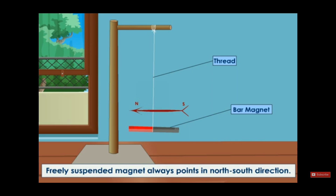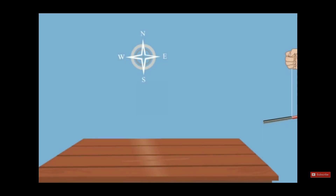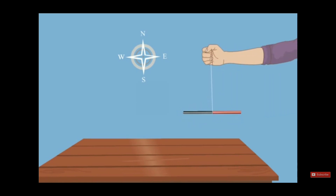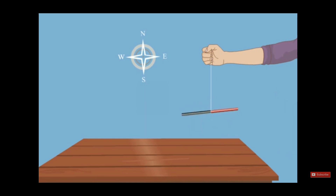This happens when we hang the magnet freely. Let us do an activity to prove this and see what happens. If we get the magnet and freely suspend it and leave it to move freely, we are going to find that the magnet will move, then it will stop in the north-south direction. And if we make it move again, it will always stop and point to the north-south direction. The north pole points to the north direction and the south pole points to the south direction.